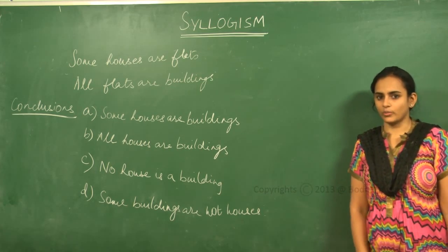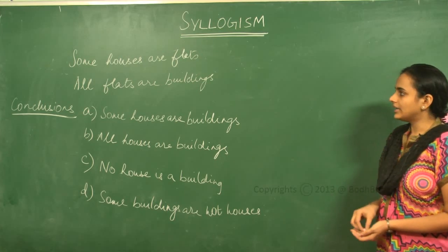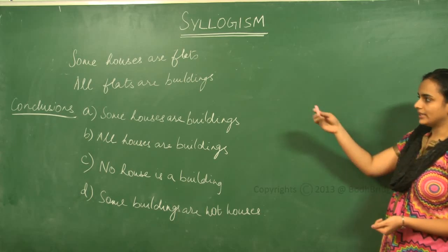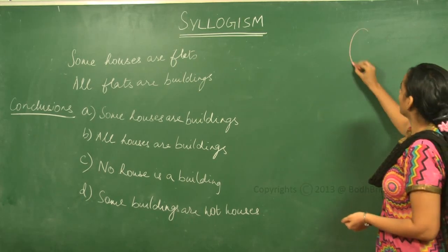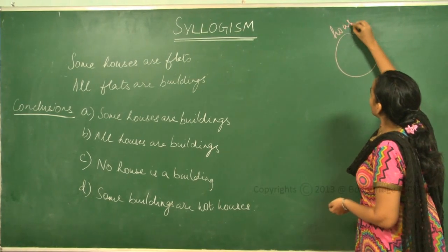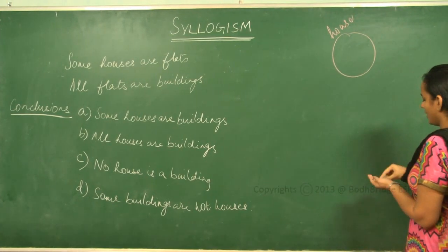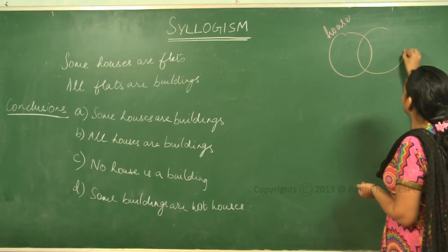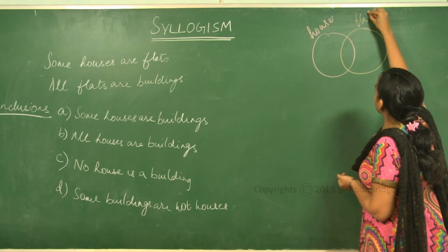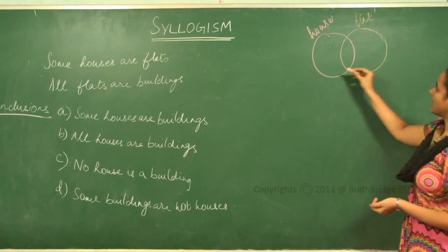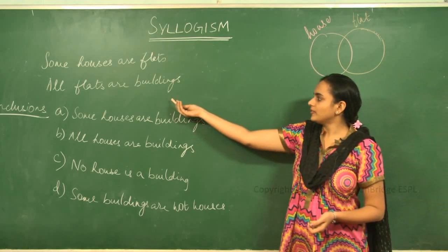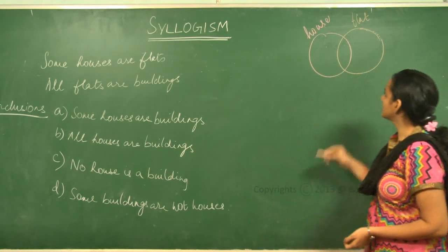To draw this using a Venn diagram — some houses are flat. We have seen that when 'some' comes, let me say this is house and this is flat. So this represents 'some houses are flat'.